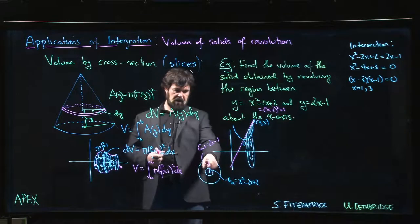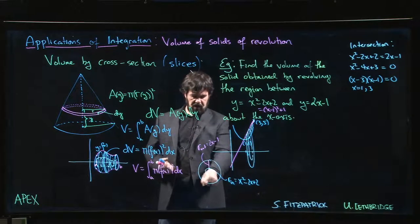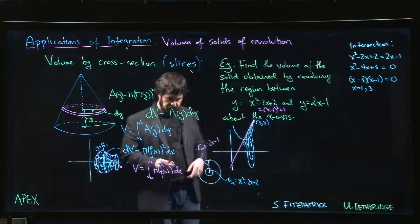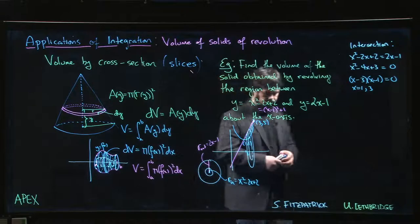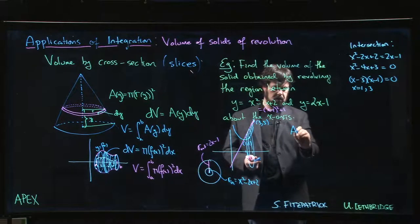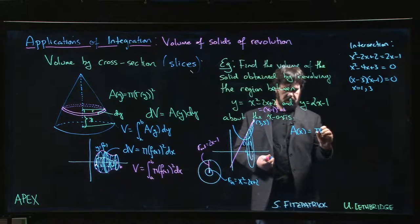And realize that the area now for my cross section, what is the area? Well, the area is the area of the big disk minus the area of the small disk.